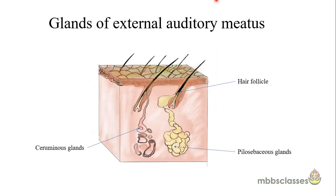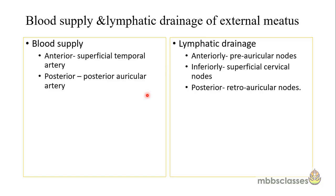This diagram shows the characteristics of the skin of the external auditory meatus. You can see the epidermis, the hair follicles, and two types of glands: the pilosebaceous glands and the ceruminous glands, which open into the hair follicle. The glands and hairs are present only in the cartilaginous part of the meatus.